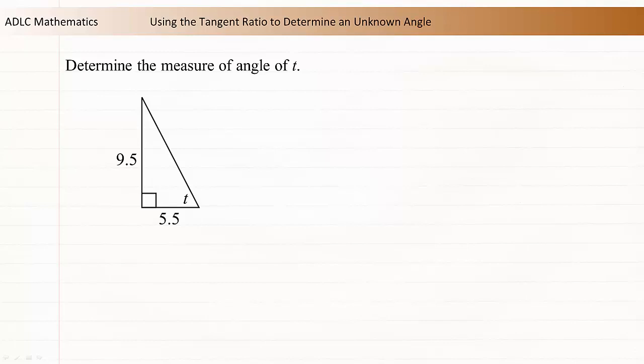In this example, we'll determine the unknown value of angle t. To begin, we'll need to determine each side's relationship to t.